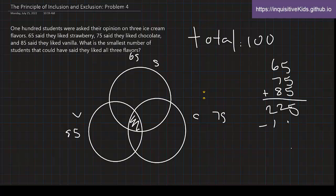So 225 subtract 100 and we get 125. That's still greater than 100. Now let's subtract one more and we get 25. That is the smallest number of students that could have said that they liked all three flavors because it was overlapped twice, meaning that it was counted three times.